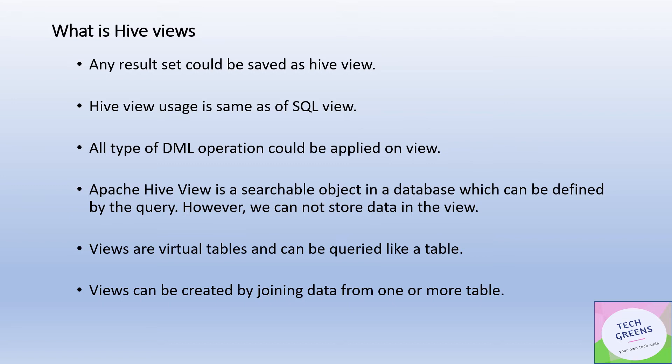Another important factor about Apache Hive views is that they are searchable objects in the database which can be defined by a query, but we cannot store any data in the view. That is why views are also called virtual tables, which can be queried like any other normal tables. Views can also be generated by joining data from one or more tables by selecting specific columns and rows.